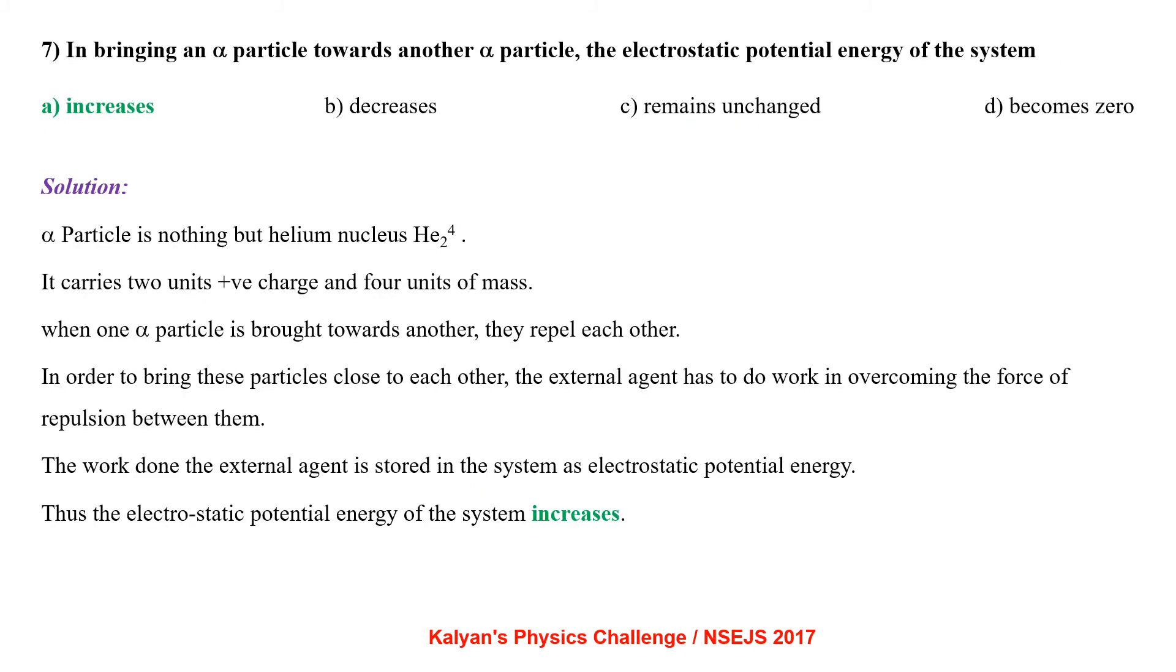In bringing an alpha particle towards another alpha particle, the electrostatic potential energy of the system. Alpha particle is nothing but a helium nucleus HE24. It carries 2 units of positive charge and 4 units mass. When one alpha particle is brought towards another, they repel each other because two similar particles repel each other. In order to bring these particles close to each other, the external agent has to do work in overcoming the force of repulsion between them. So the work done by the external agent is stored in the system in the form of electrostatic potential energy. Thus the electrostatic potential energy of the system increases.